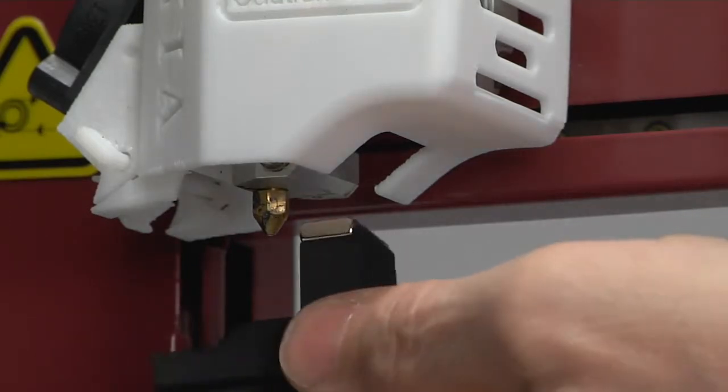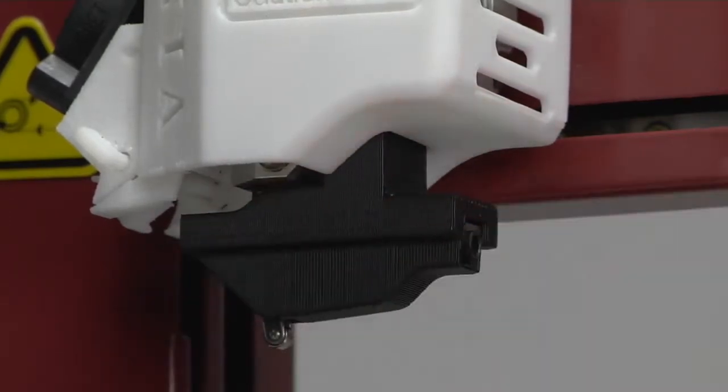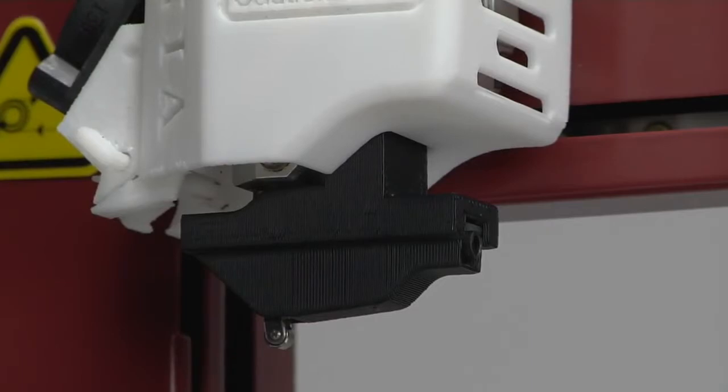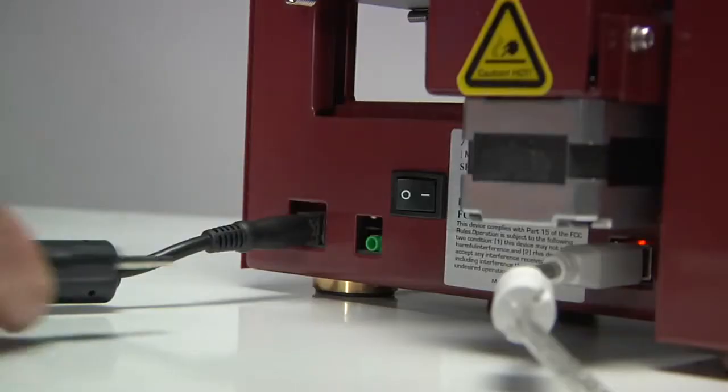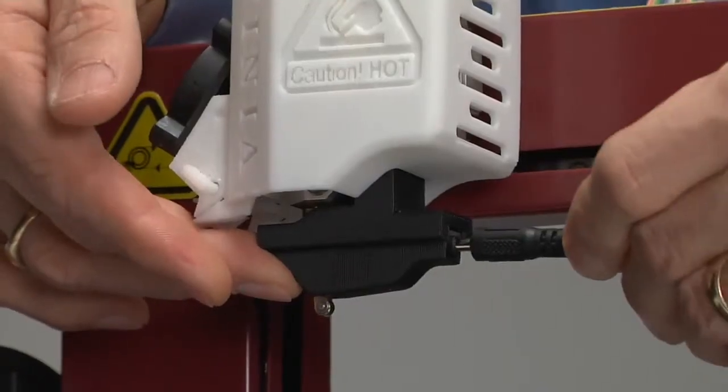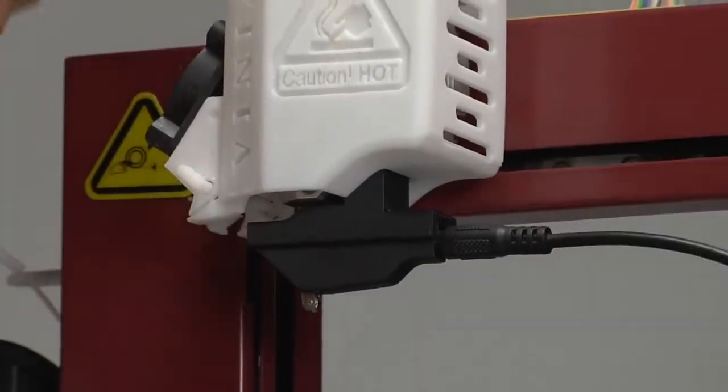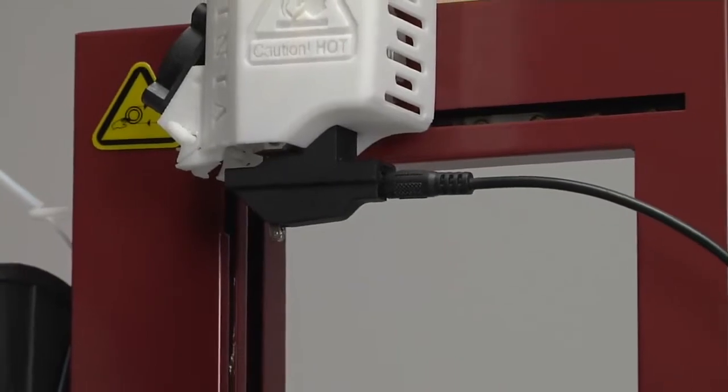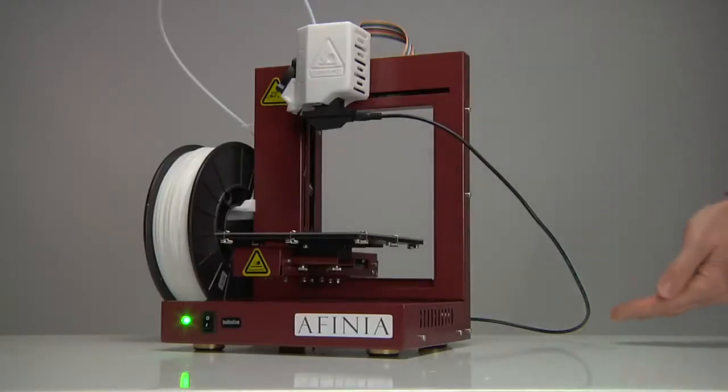connect the platform calibration probe to the extruder head. It slips over the extruder nozzle and magnetically clicks into place. Plug one end of the data cable into the green connection on the back of the printer and the other end into the platform calibration probe, making sure the data cable is routed around the right side of the printer and not through the printer frame.